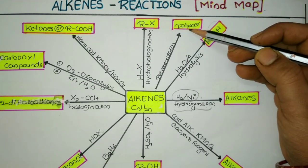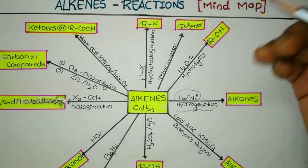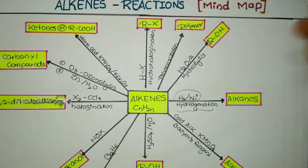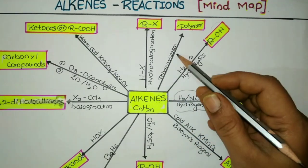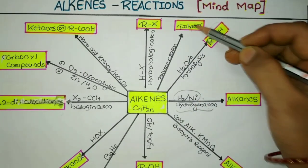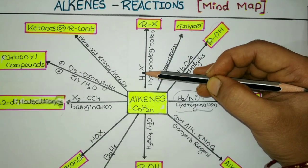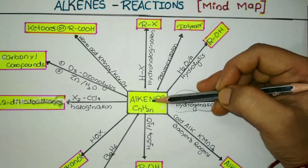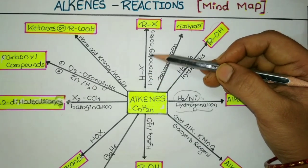When alkenes undergo polymerization, the doubly bonded alkene monomers form a long chain to give a polymer. Best examples are polyethene and polytetrafluoroethene. Next, when alkenes are treated with a hydrogen halide (HX), they undergo hydrohalogenation — addition of the hydrogen halide — to give the respective alkyl halide (RX).